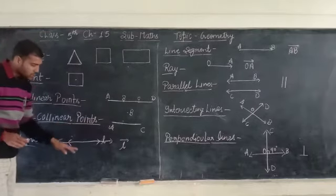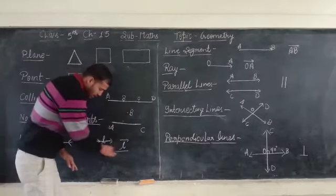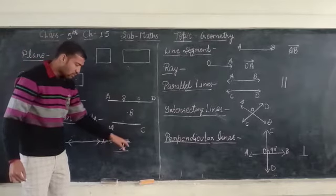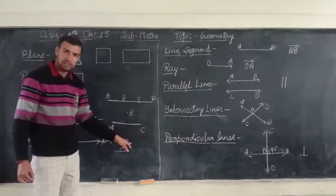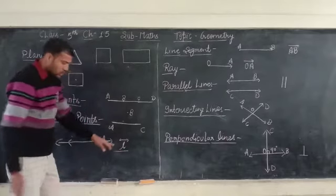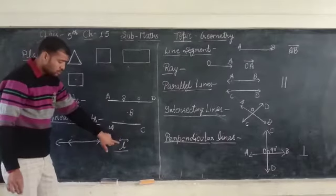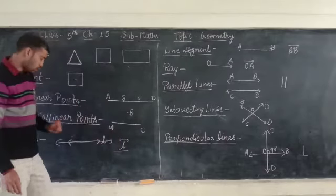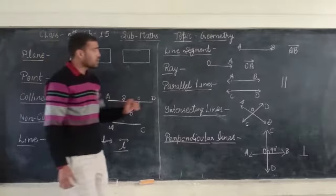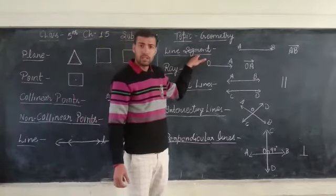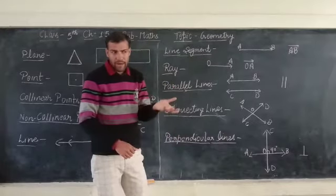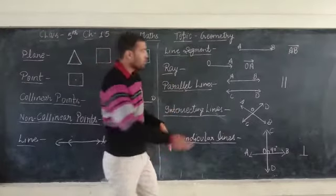The length of a line cannot be measured. It is noted simply by a symbol with arrows on both ends. A line is a collection of points in a straight line, extending endlessly in both directions.